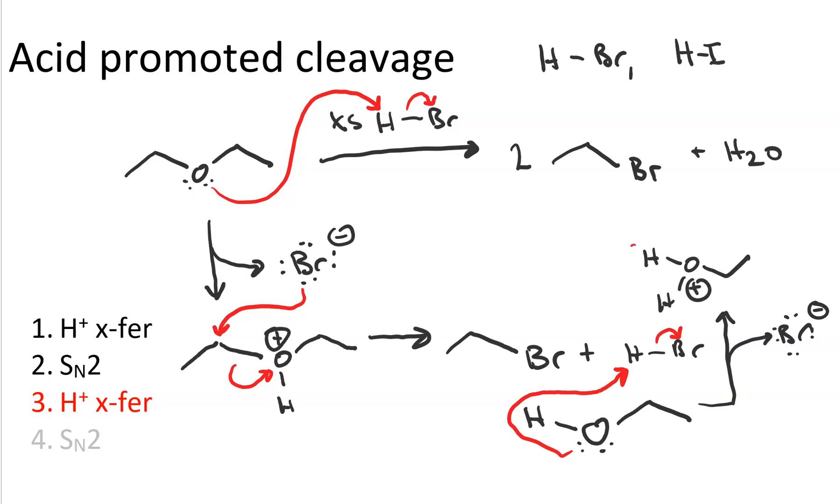And that water is, you guessed it, a good leaving group. In the fourth step we get SN2 attack again with the bromide attacking the alpha carbon of the protonated alcohol and the water leaving to give us our second equivalent of ethyl bromide and our water.